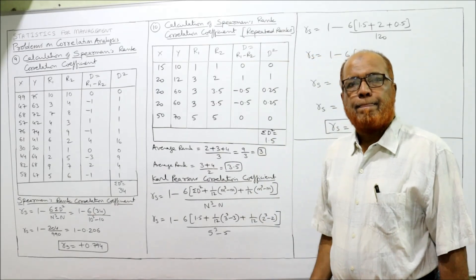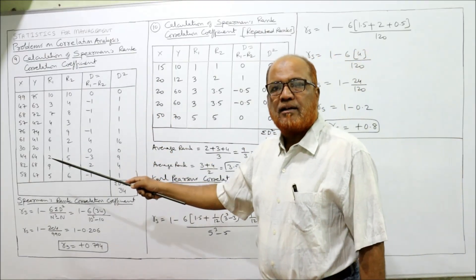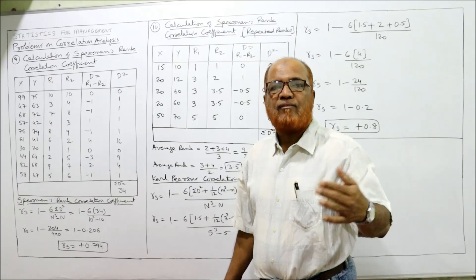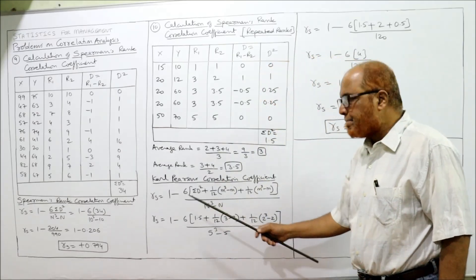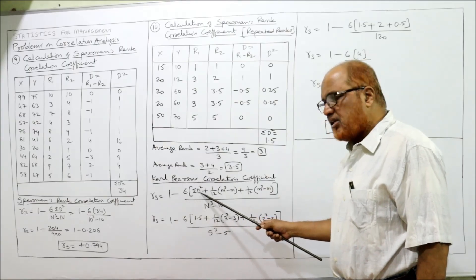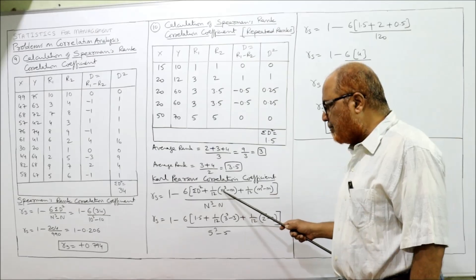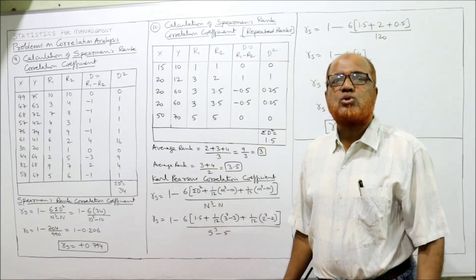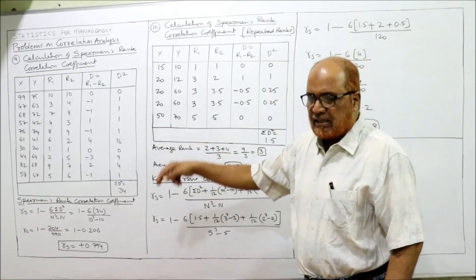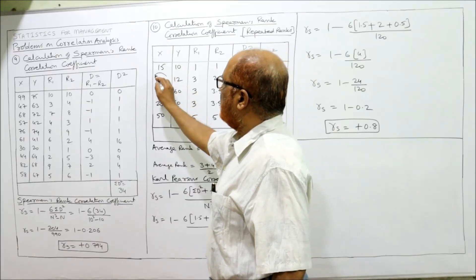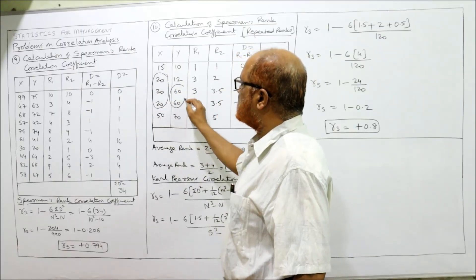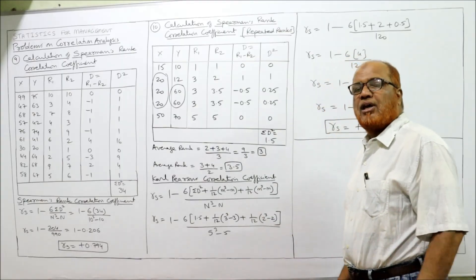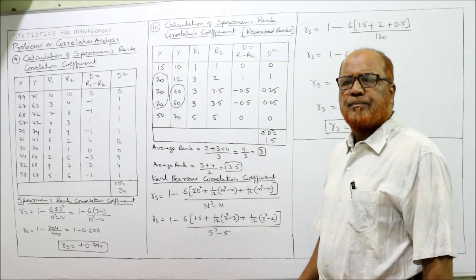When ranks are not repeated, the formula is RS = 1 − (6ΣD²) / (N³ − N). But when ranks are repeated, we modify the formula. RS = 1 − 6[ΣD² + (1/12)(m³ − m) + (1/12)(m³ − m)] / (N³ − N). Two correction terms are added because there are 2 groups of repeated values. For 3 groups, we would add 3 times, and so on.